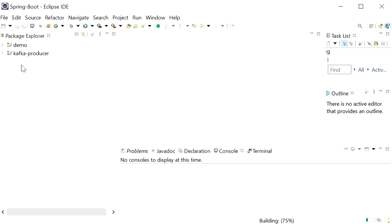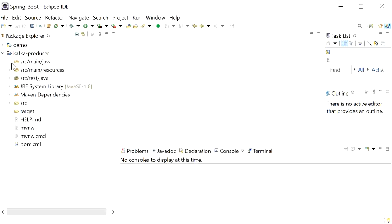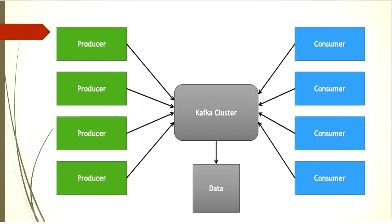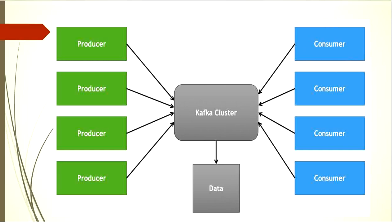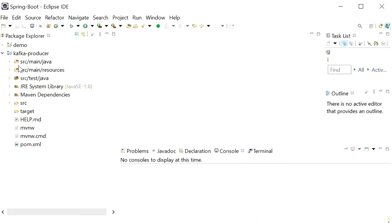Now we can see our project is imported successfully. In this video we will create a Kafka producer that will send a model object — we will create a User model — and this model will go to our Kafka topic where data will be written. Then the consumer will consume this message, which we'll verify using the Kafka console. In the next video we will also create a Kafka consumer demo with Spring Boot.